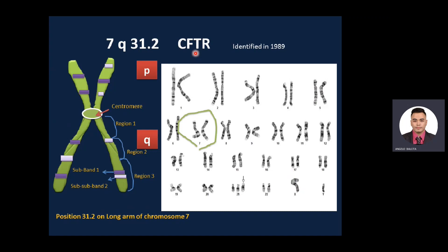Let's take another example: cystic fibrosis, an autosomal recessive disease affecting the lung and gastrointestinal tract, associated with chronic lung disease, failure to thrive, and malabsorption. In 1989, scientists identified the genetic defect. The address on the chromosome is the long arm of chromosome 7, band 3, sub-band 1, sub-sub-band 2. The correct way to read this is: genetic defect in the long arm of chromosome 7, 3.1.2.